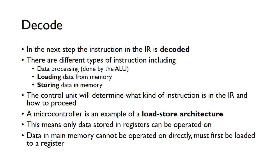The next step in the instruction execution cycle is the decode step. This is where the instruction in the instruction register is decoded. There are typically different types of instruction. These can include data processing instructions — the ones done by the ALU, such as addition, subtraction, and logical operations. We can also load data from memory, and we can also store data back into memory. The control unit determines what kind of instruction is in the instruction register and how to proceed.